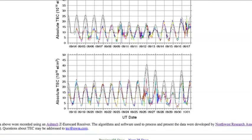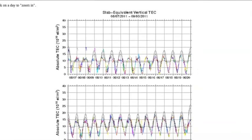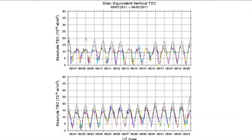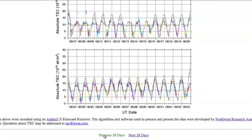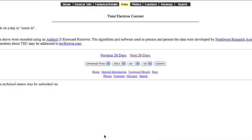Just about every time we had a geomagnetic storm you can go back and see the spikes. But you can take this back as far as you want, and essentially you're going to see that apart from geomagnetic storms, which have spikes that go higher, the total electron content has been rising and rising and rising. There's no real reason to think that's going to stop.